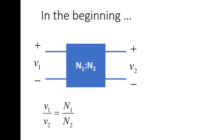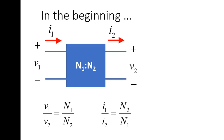Also, when we feed a current I1 to the port on the left, entering the ideal transformer at the top, then on the other side a current I2 comes out of the top of the transformer. The ratio of those two currents is given as the inverse of N1 over N2.